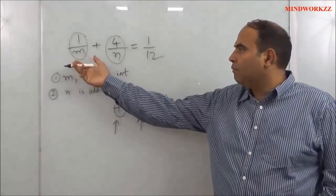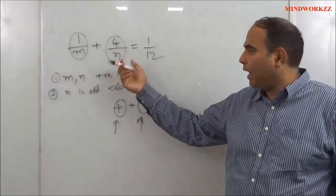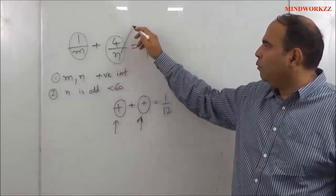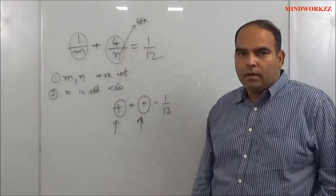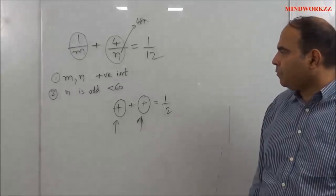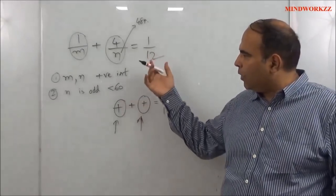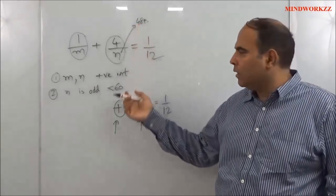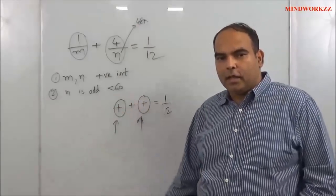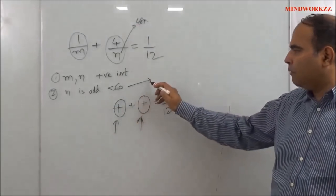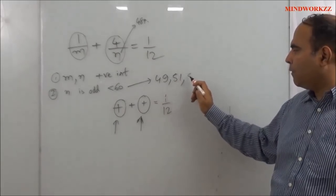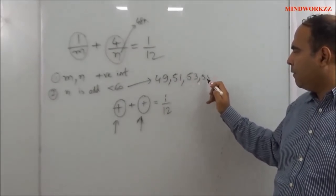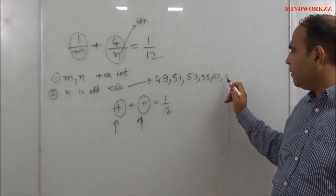So then you realize that if n is more than 48, and n is odd and less than 60, you realize that the possible values for n that you need to test this equation for is 49, 51, 53, 55, 57, and 59.